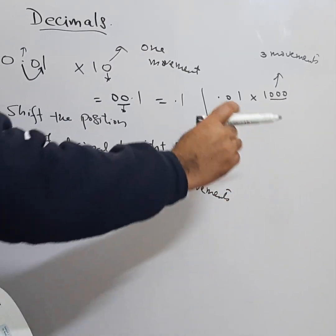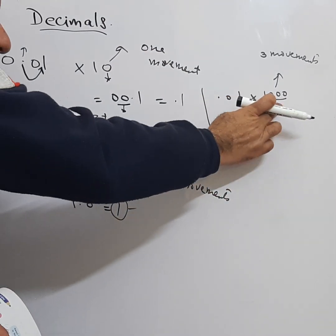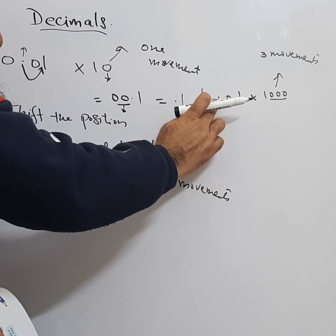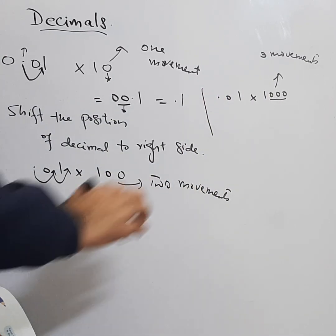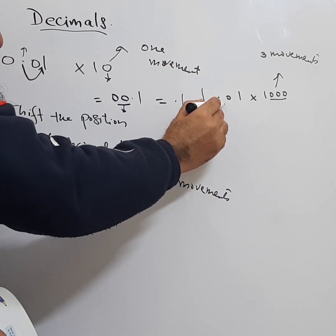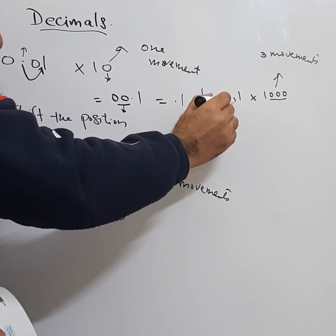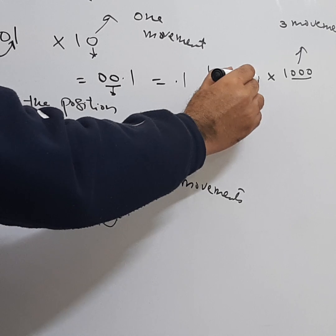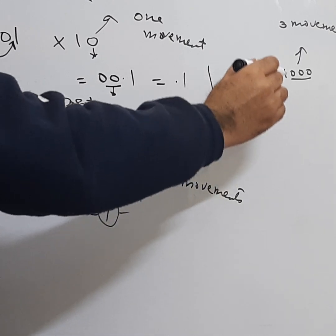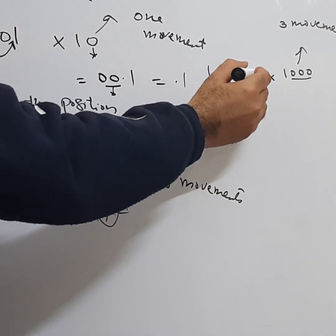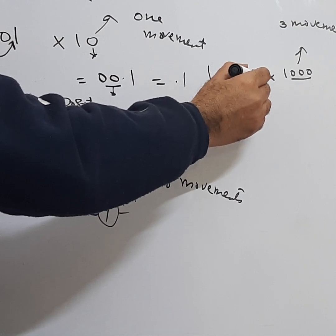When we multiply 0.01 with 1000, we need to shift this or move this decimal on the right side three times. One time from here, two times, then again we need to go to the third place, but we don't have anything, so we will put zero here. So it will be going to this side. It becomes 10.